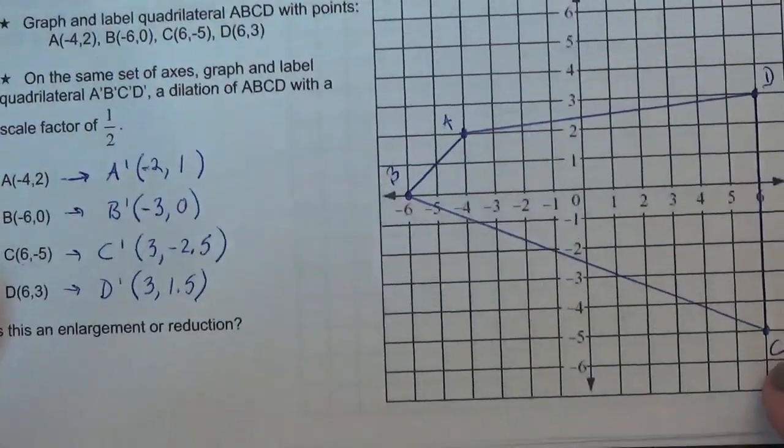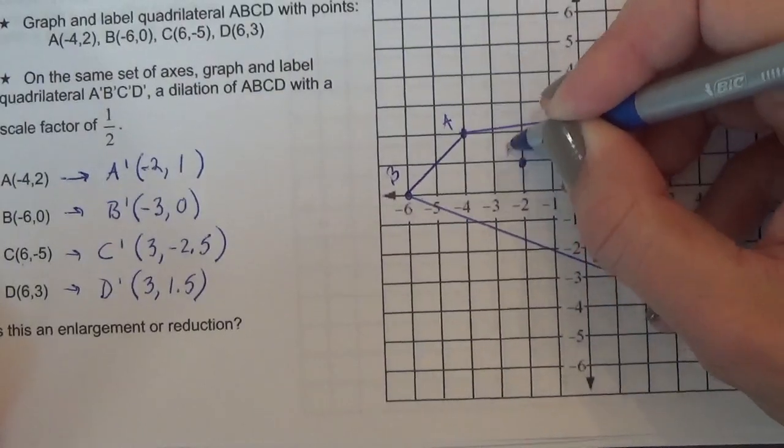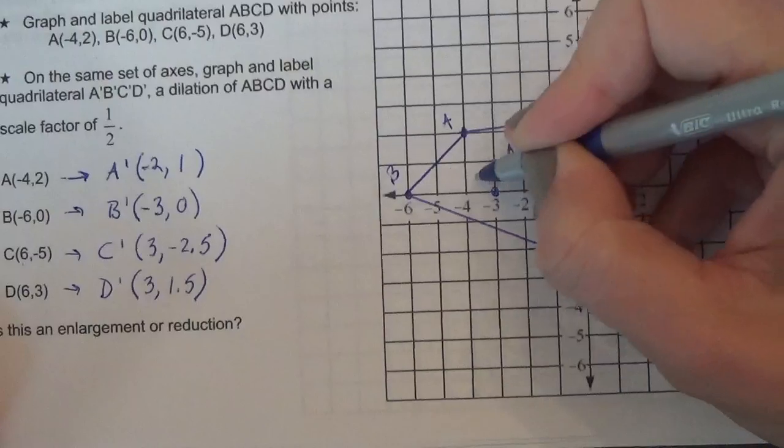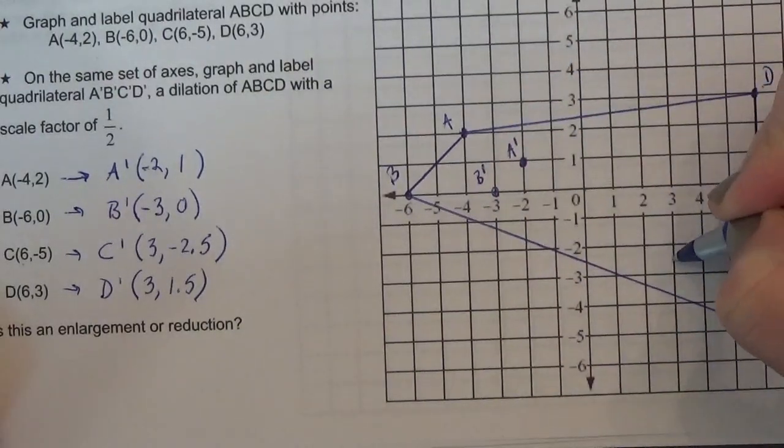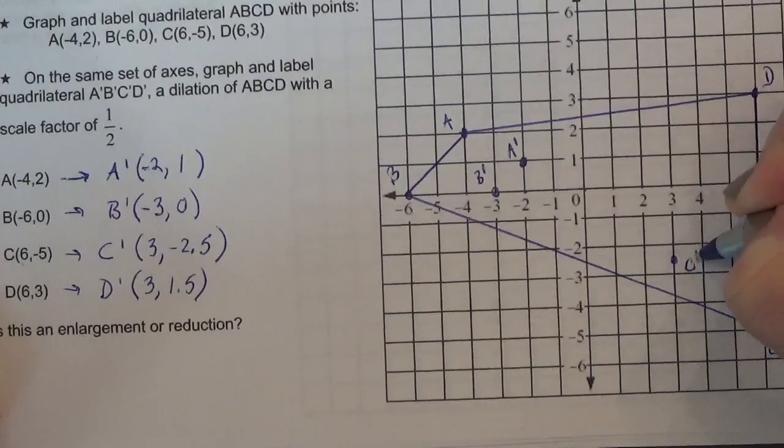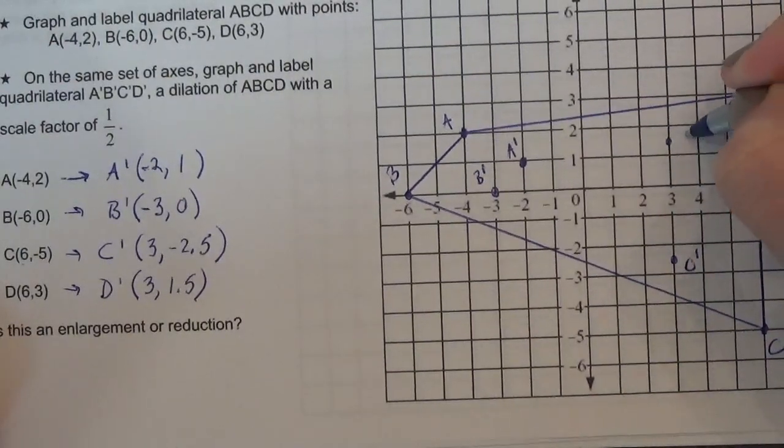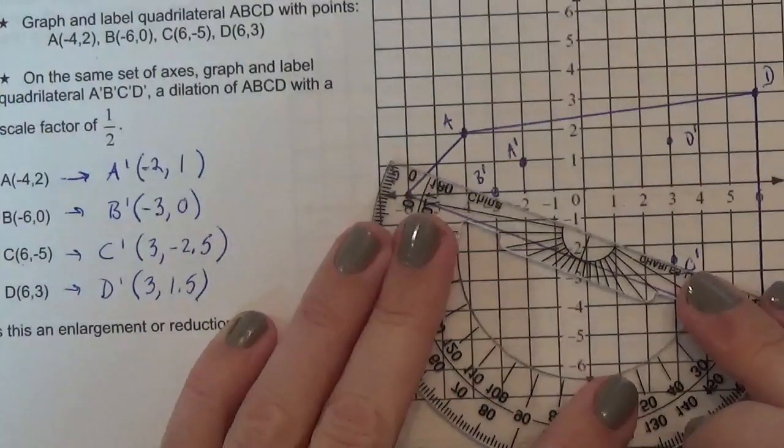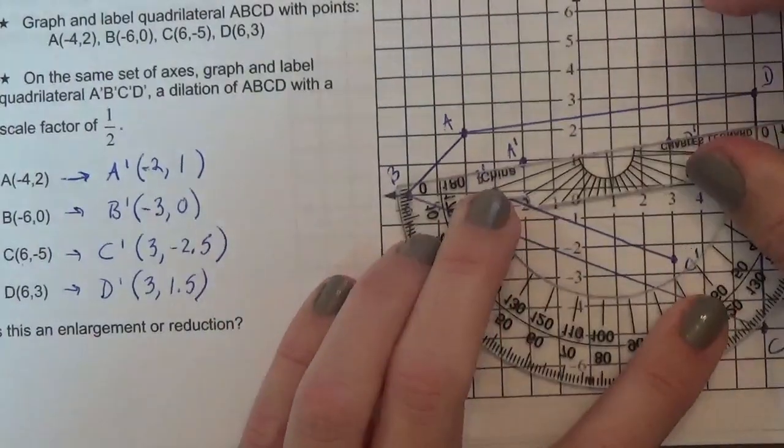And then we can graph it. So A prime is negative 2, 1. Mark it A prime. B prime is negative 3, 0. C prime is 3, negative 2.5. And D prime is 3, 1.5. So our figure should look similar but just be smaller, obviously, because we multiplied by a half.